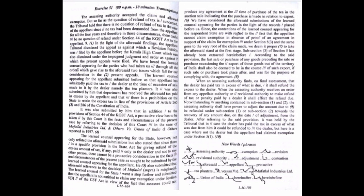After referring to the said provision, it was held by the tribunal that, in case the dealer has paid the tax in excess of what was due from him, it could be refunded to the dealer, but here is a case where not the dealer but the appellant had claimed exemption under section 5.